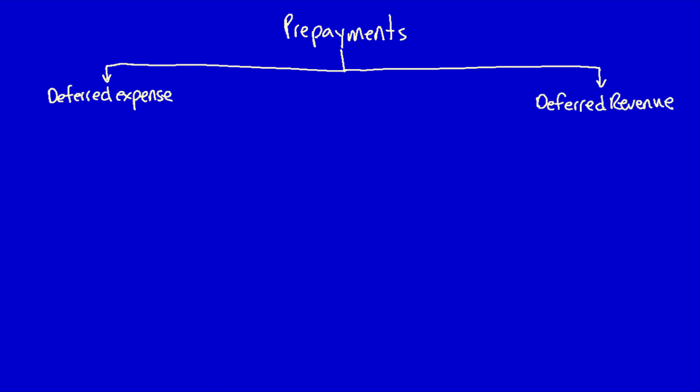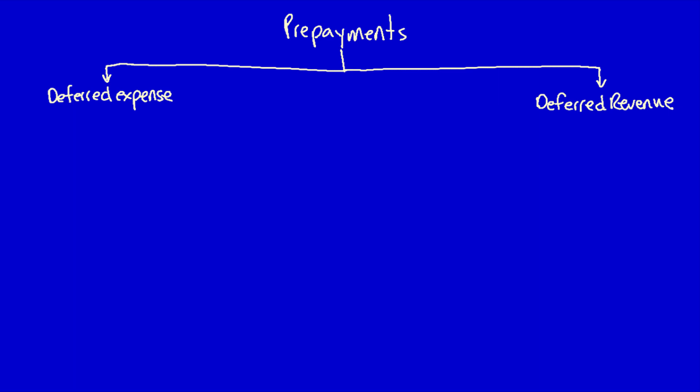For prepayments, at the beginning of the period there's a balance on the trial balance, or during the period there's an exchange. For a deferred expense, the company purchases an asset which has future economic benefit. The company may either pay for the asset with cash, or they will pay for it on account.